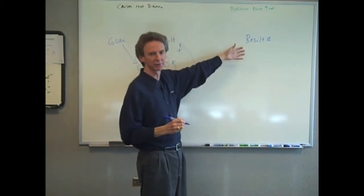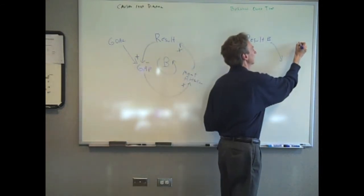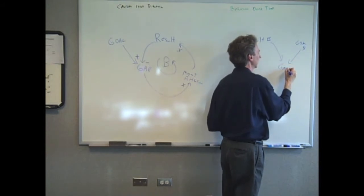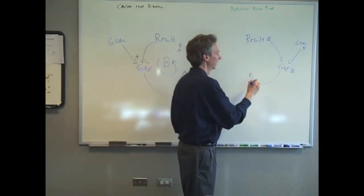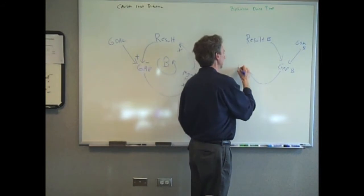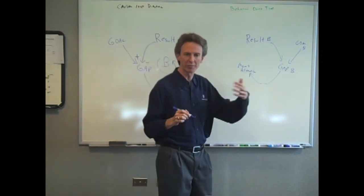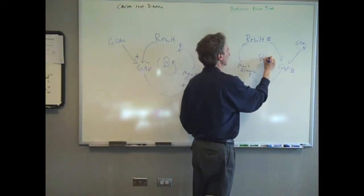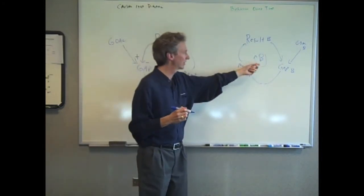Here you have a different result. I'll call this result B. And that is compared against goal number B. And that will give you a gap. The gap will affect management attention. And management attention, more management attention will drive up the result. So this is the second balancing loop, which is identical to this one.